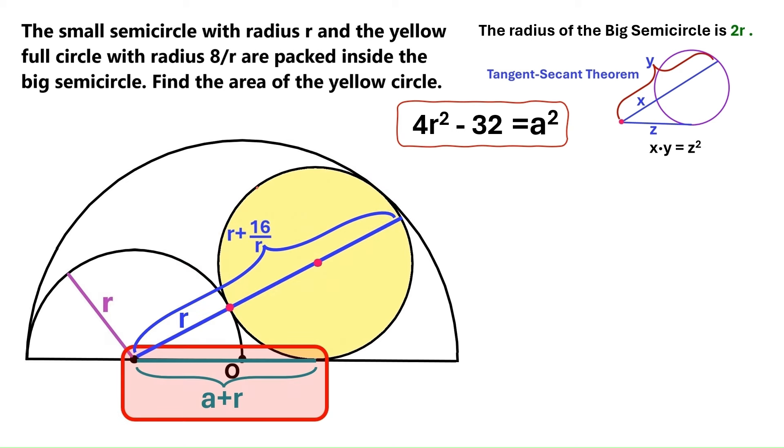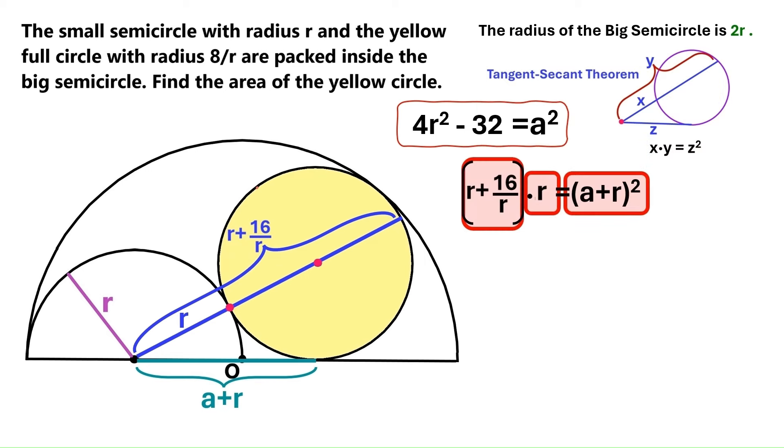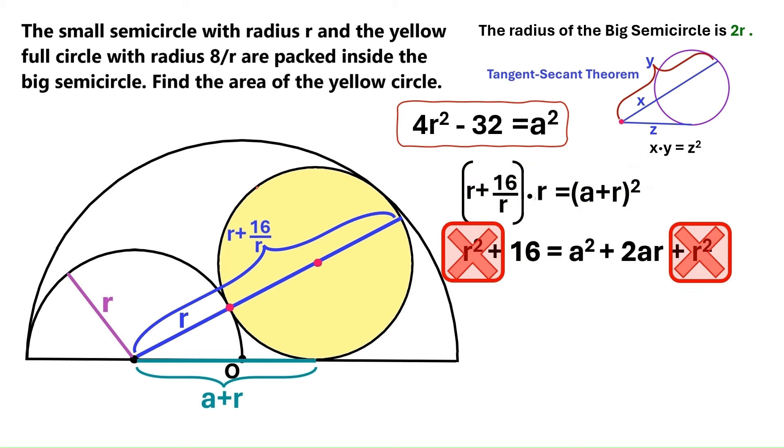Now, again, this segment is a tangent to the yellow circle. And this blue line is a secant. And they have a common point of origin. That means we can apply the tangent-secant theorem. So let's take all these distances and combine them into this equation. And let's do the math to get this second equation.